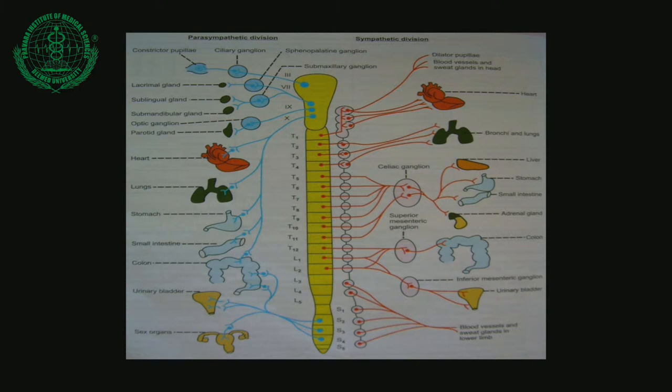There are 5 sacral ganglia from S1, S2, S3, S4, and S5, which receive the pre-ganglionic fibers from L1 and L2 segments. Post-ganglionic fibers from the sacral ganglia supply the blood vessels and sweat glands in the lower limbs below the sacral level.